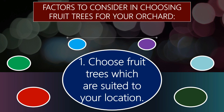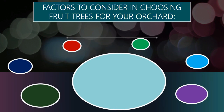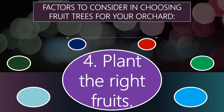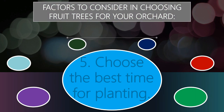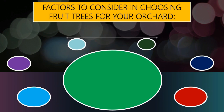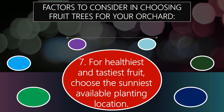One: choose fruit trees which are suited to your location. Two: choose trees based on your needs or market demands. Three: consider how much effort you will exert. Four: plant the right fruits. Five: choose the best time for planting. Six: consider the climate in your area. Seven: for the healthiest and tastiest fruit, choose the sunniest available planting location.